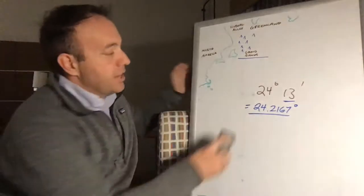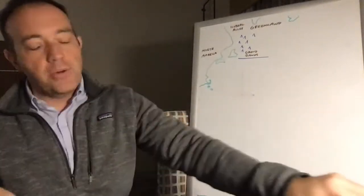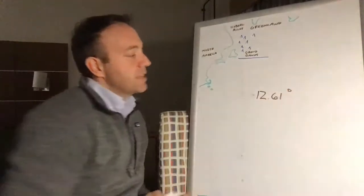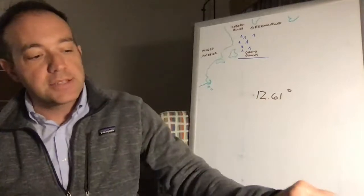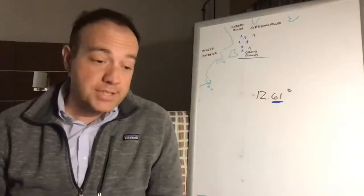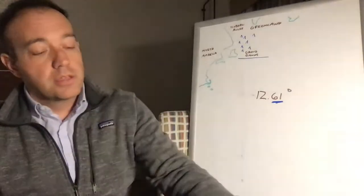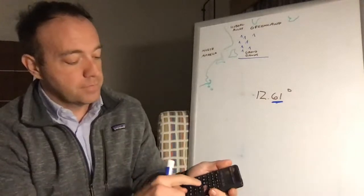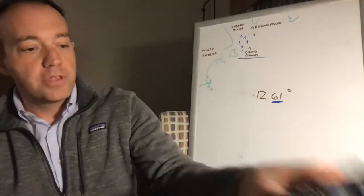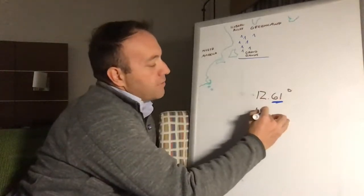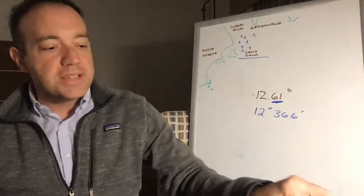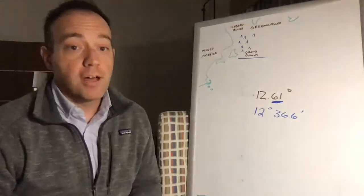Likewise, going the opposite direction — say you had 12.61 degrees, how do you turn that into degrees and minutes? Take the decimal part and multiply by 60. So 0.61 times 60 equals 36.6, giving you 12 degrees 36.6 minutes. That's a skill set we'll need when working with the formulas.